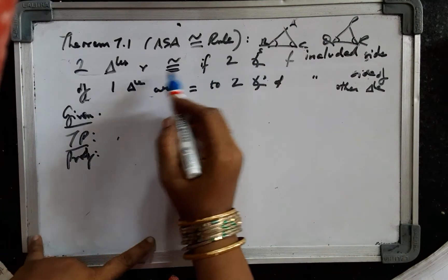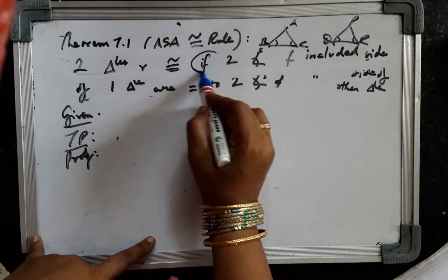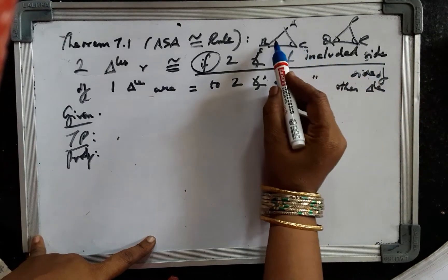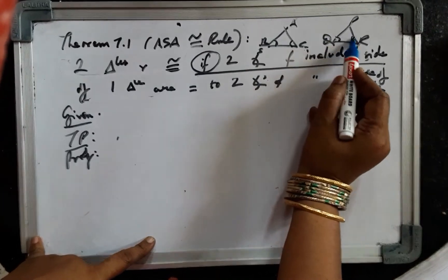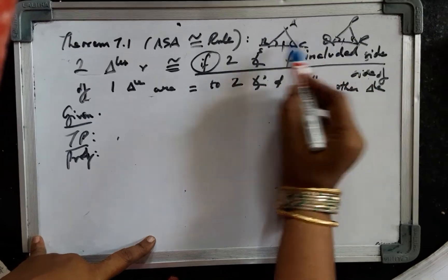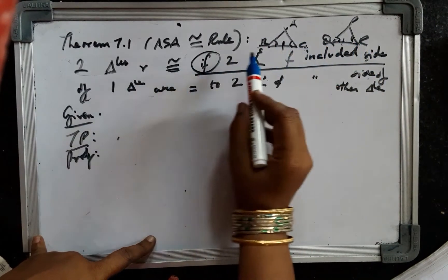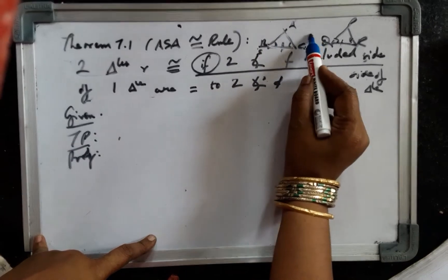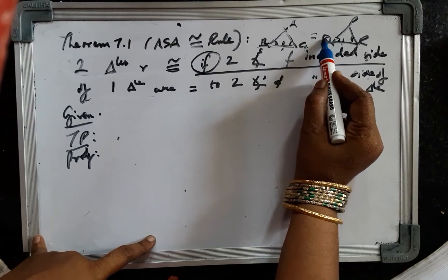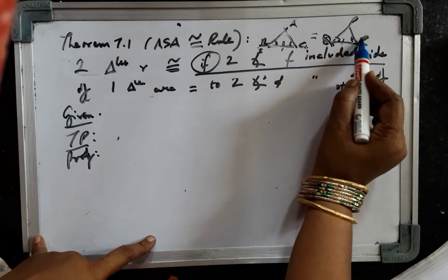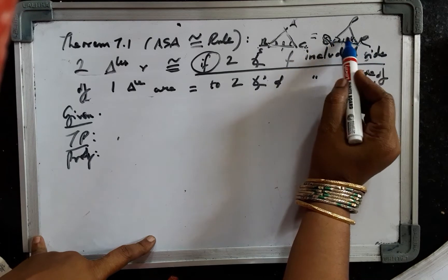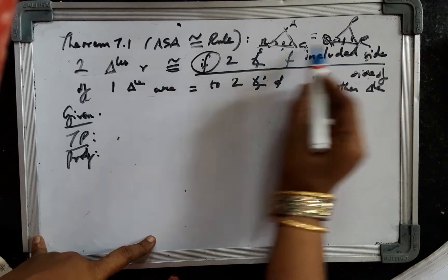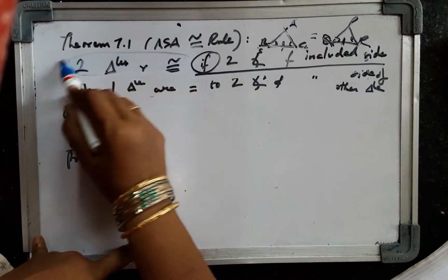In this problem, the 'if' component is the given component: if two angles and the included side BC of one triangle are equal to the same two angles and the included side of another triangle, this is the given component.